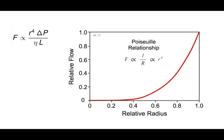Regarding the radius: if we cut the radius of a vessel in half — say from its full value to 0.5 — we drop flow by almost 90%. Just changing the radius has a gargantuan impact on how much flow goes through.